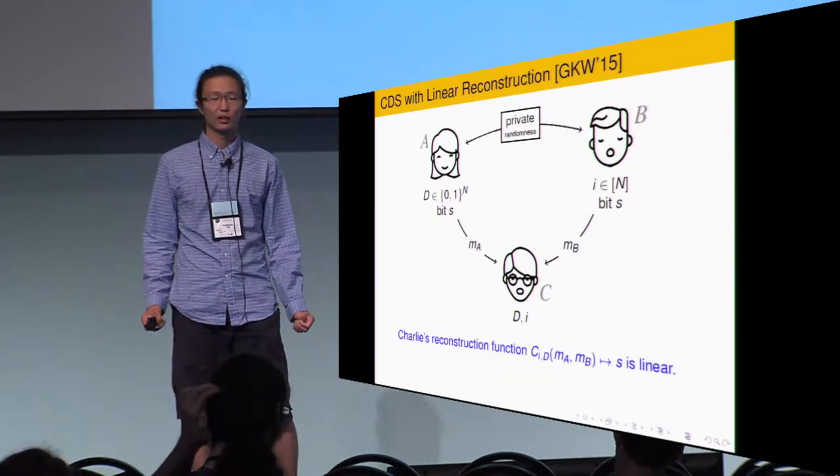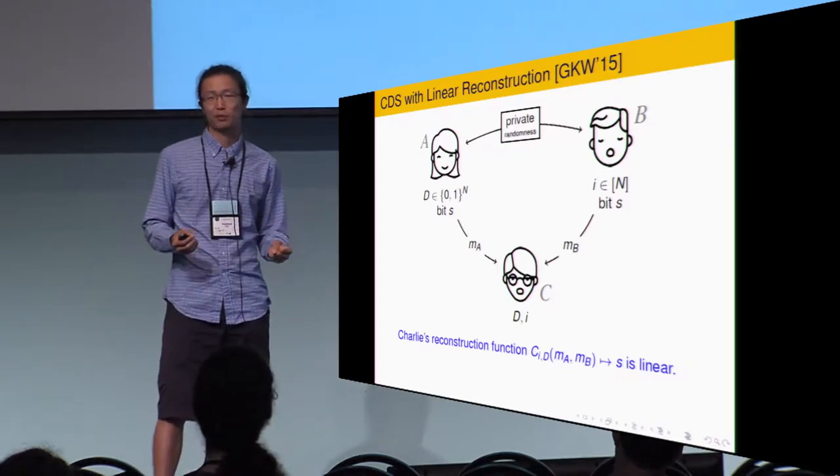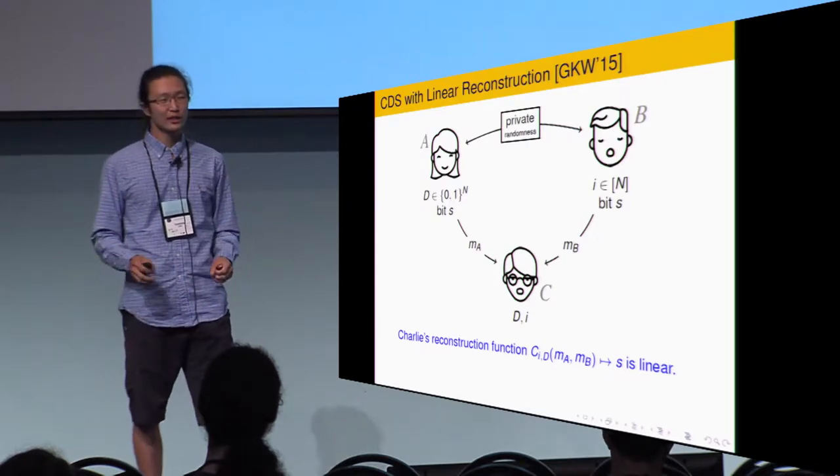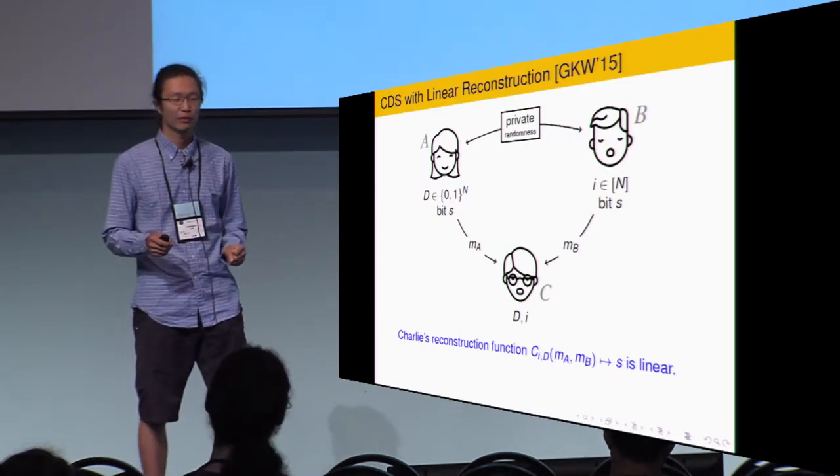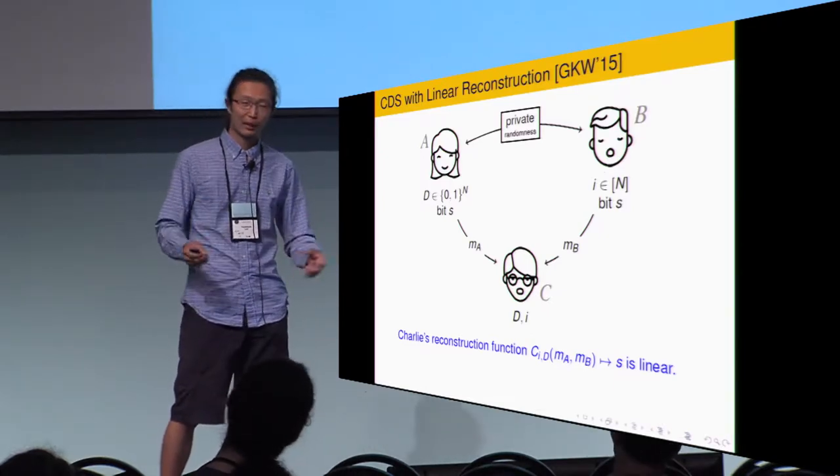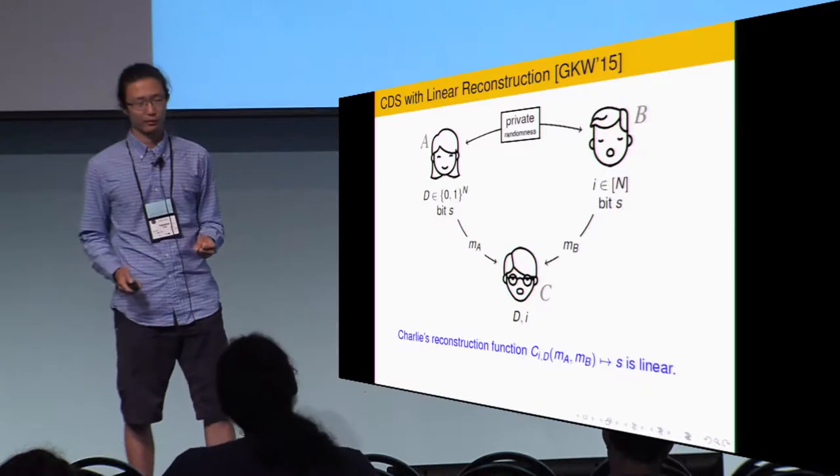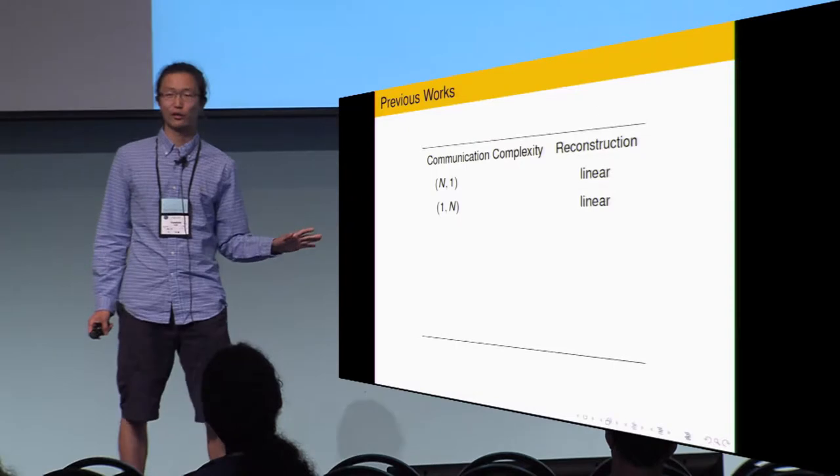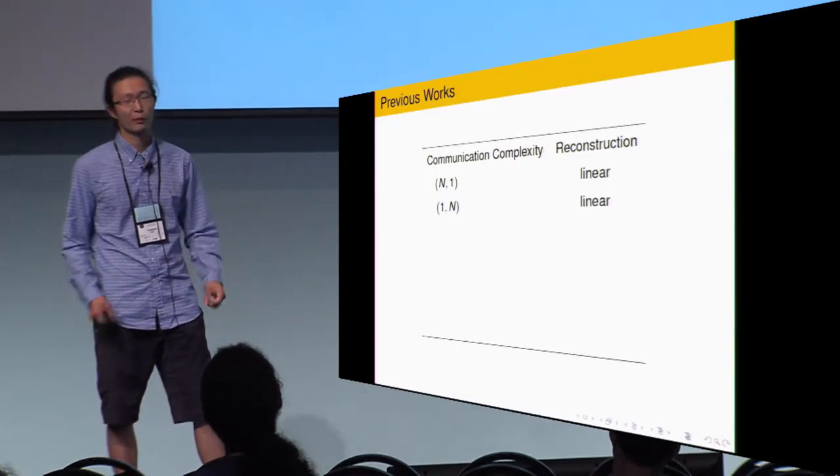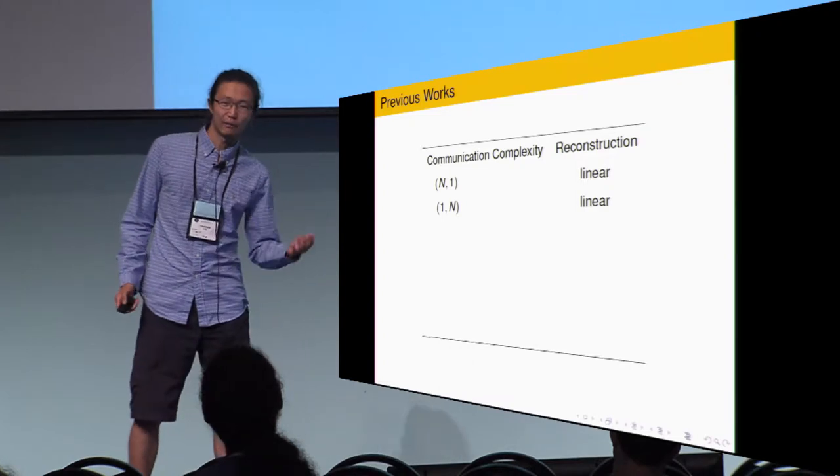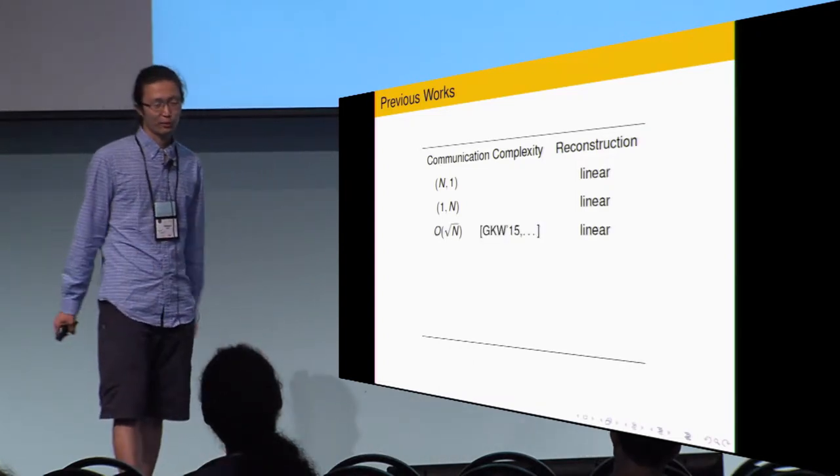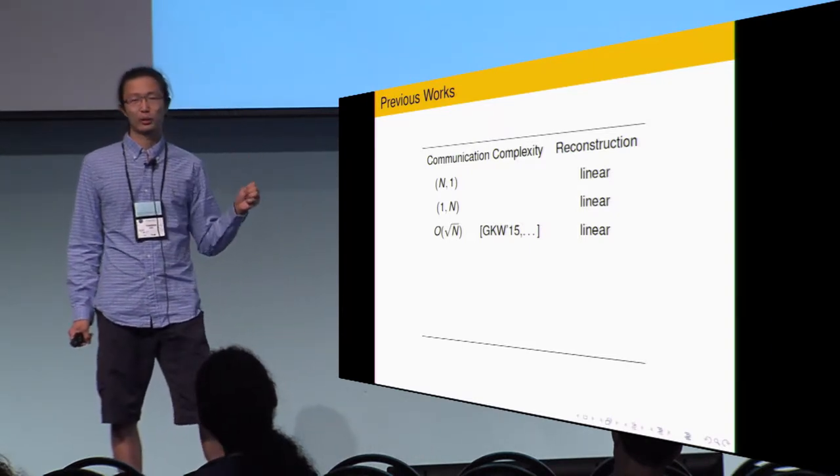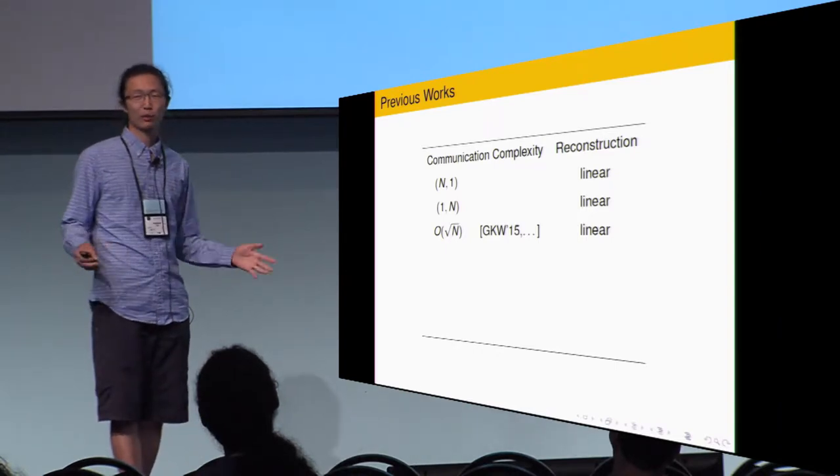In this case, when Charlie wants to reconstruct the secret when D_i is one, he also does something very simple. He took the bit sent by Alice, XOR with some of the bit sent by Bob. In the previous two examples, Charlie reconstructed the secret by XOR with some of the bit he received, which is a linear function mod two. We said the CDS have linear reconstruction if Bob reconstructed the secret by applying a linear function on the message he received.